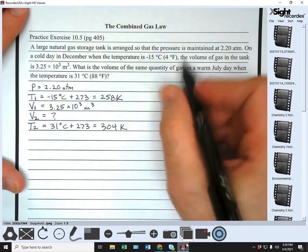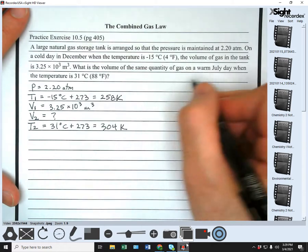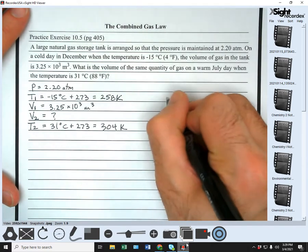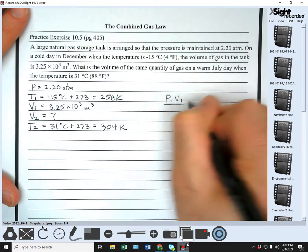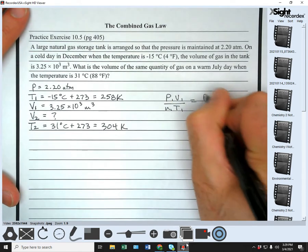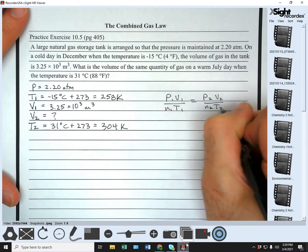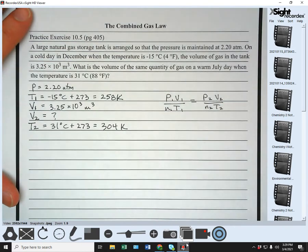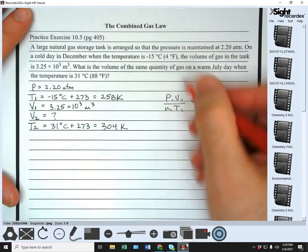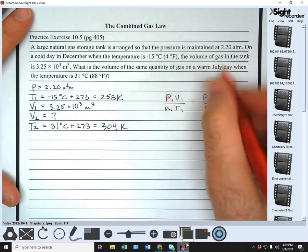So we actually don't need that one. So again, if we start with the concept of P1 V1 over N1 T1 equals P2 V2 over N2 T2, and we take out or get rid of things that don't change. So the pressure stays the same on both sides. So we don't need to put the pressure in or consider it.